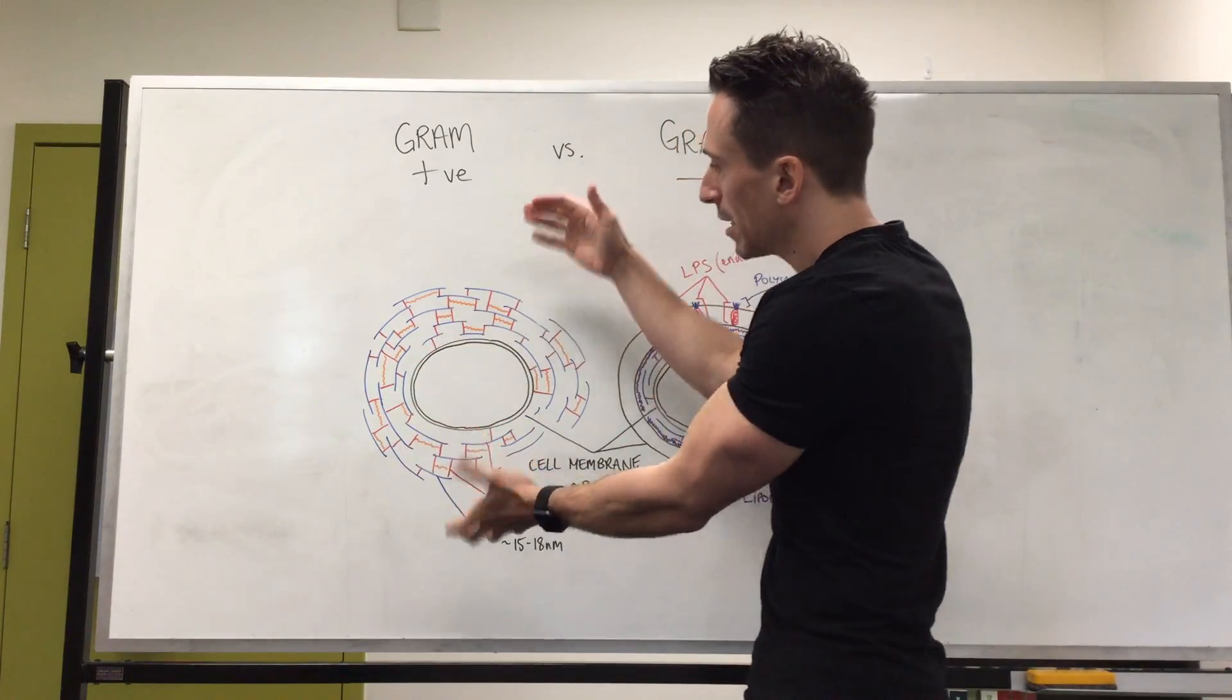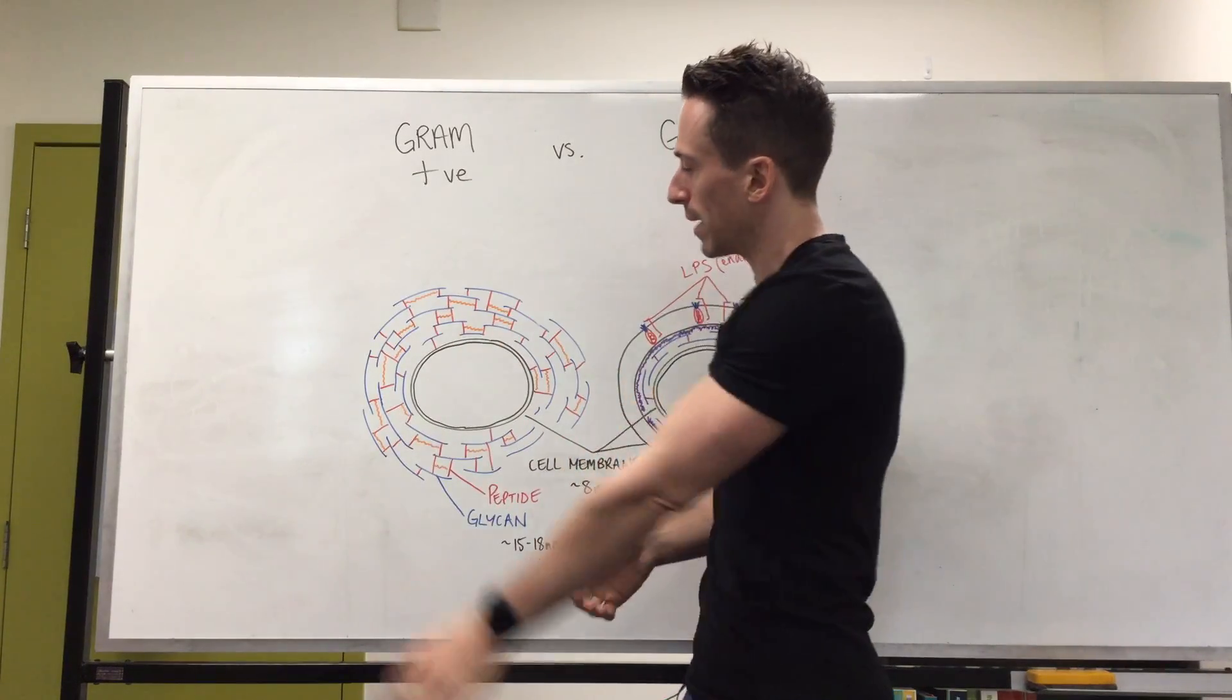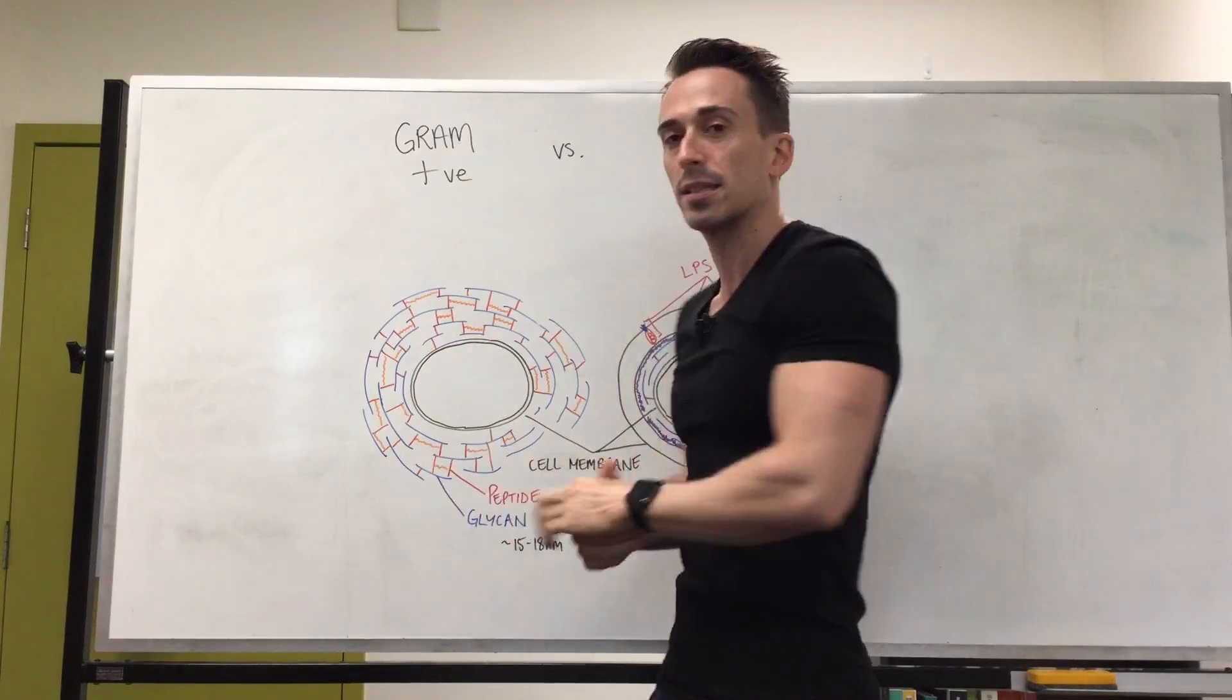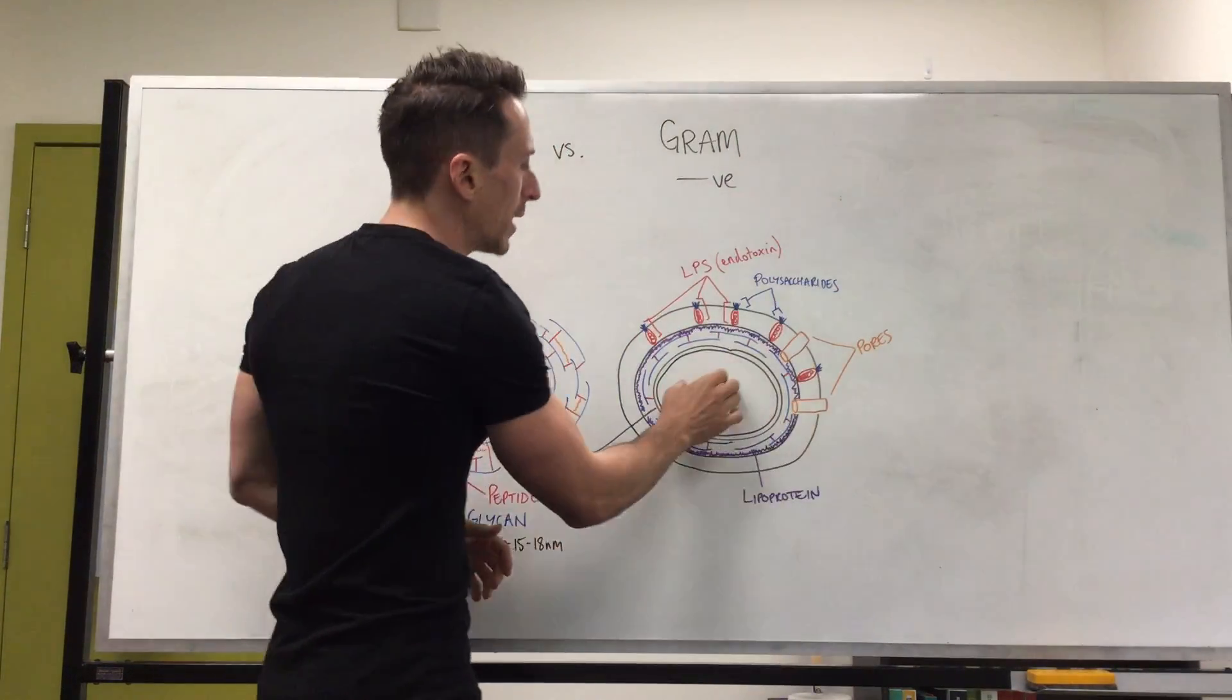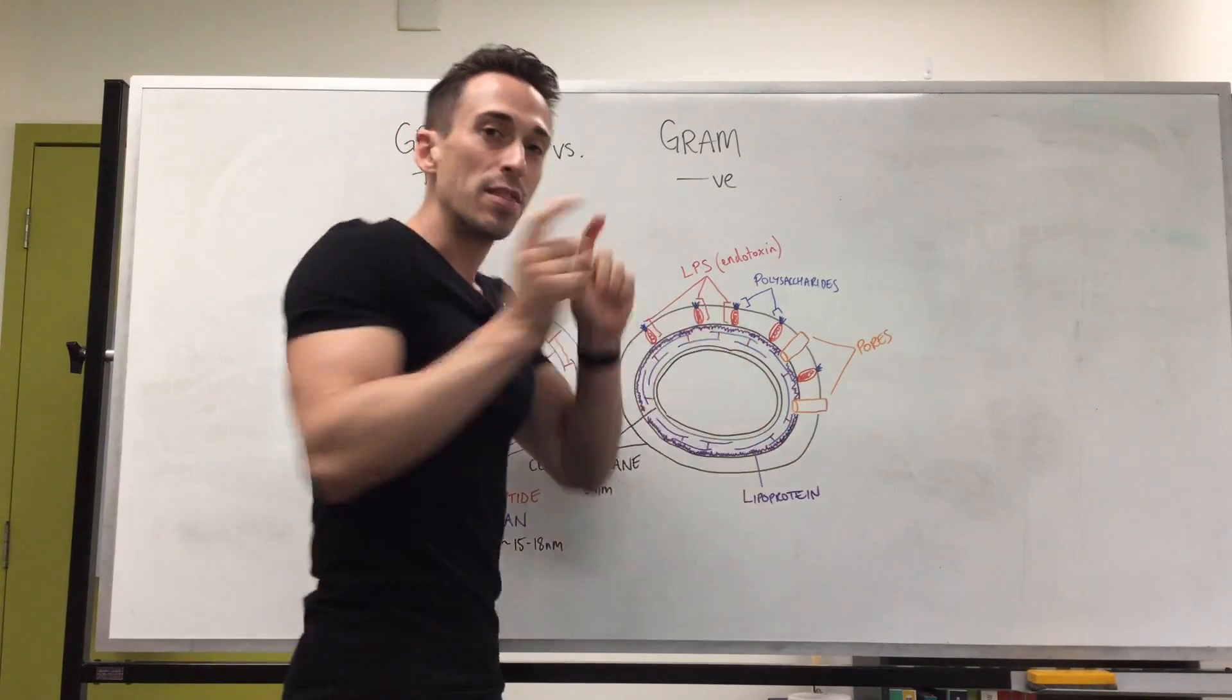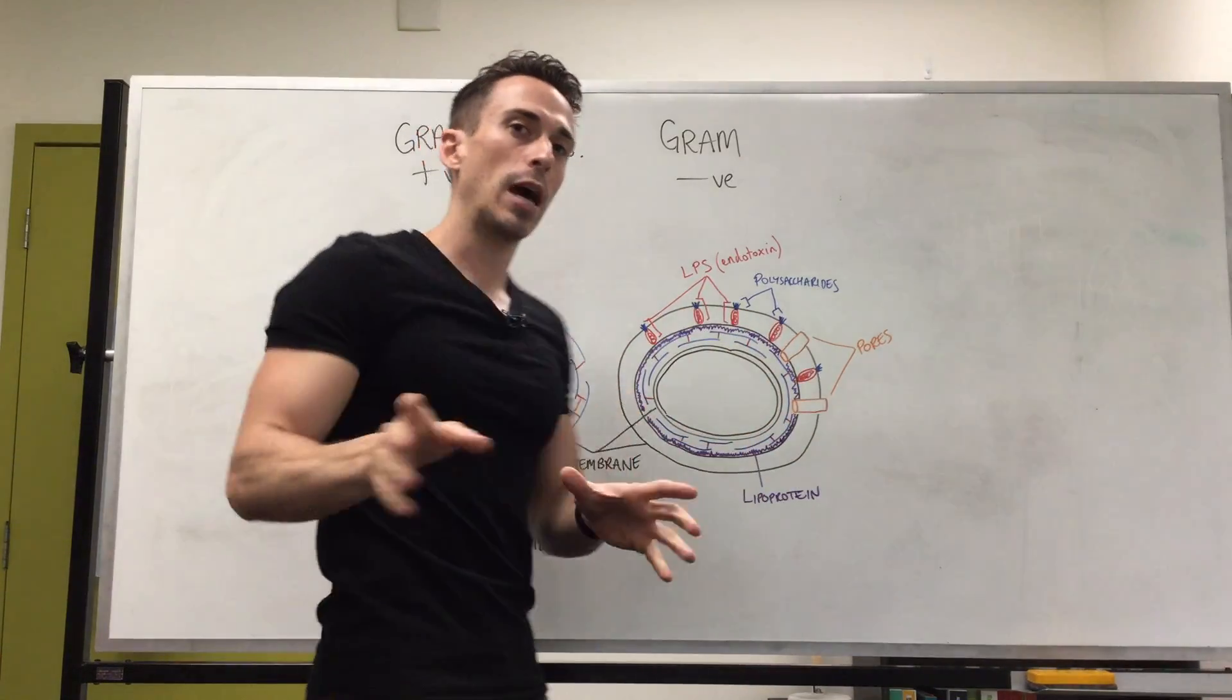Now gram-positive bacteria don't have anything else really surrounding them on the outside. It's basically a phospholipid bilayer on the inside and then a very thick cell wall. When we look at gram-negative, it has the phospholipid bilayer and a very thin cell wall, but then what it has is another phospholipid bilayer.